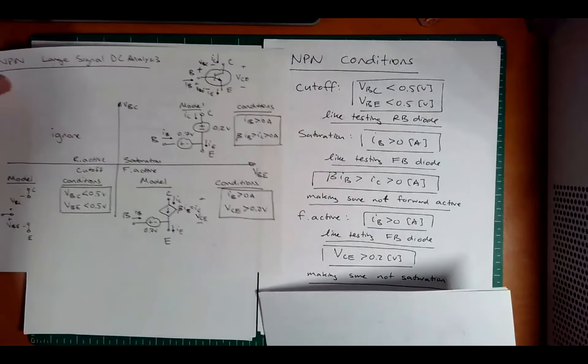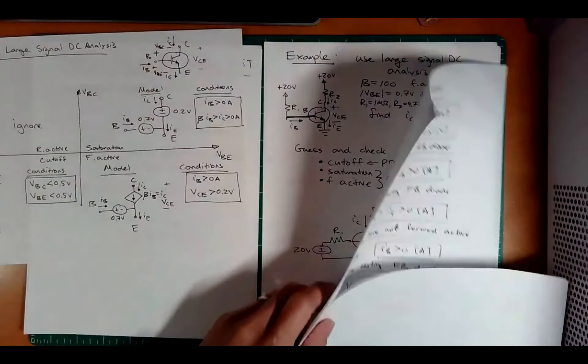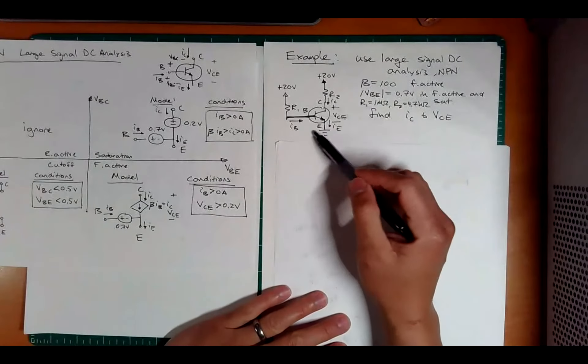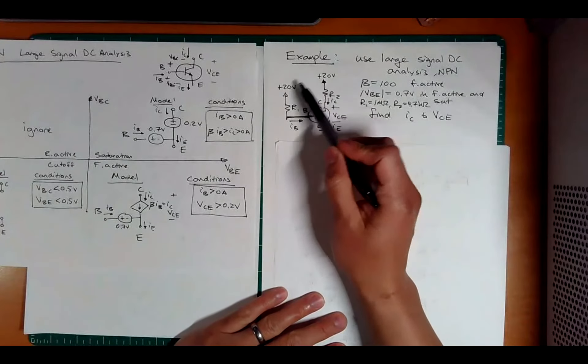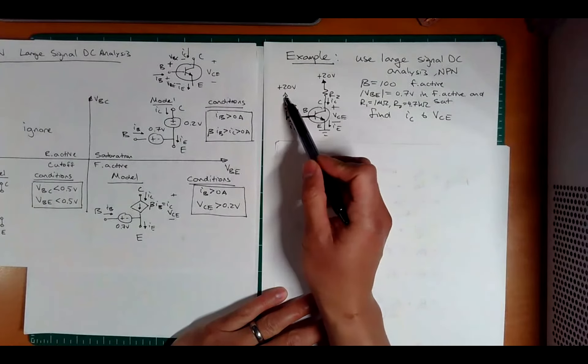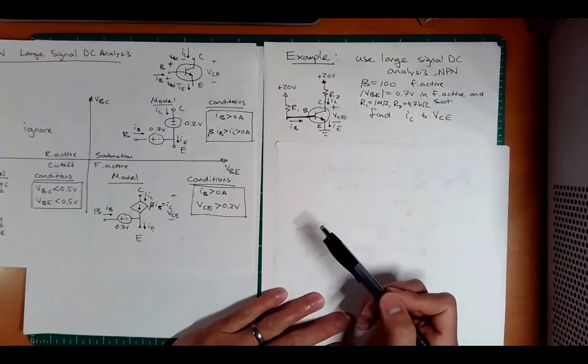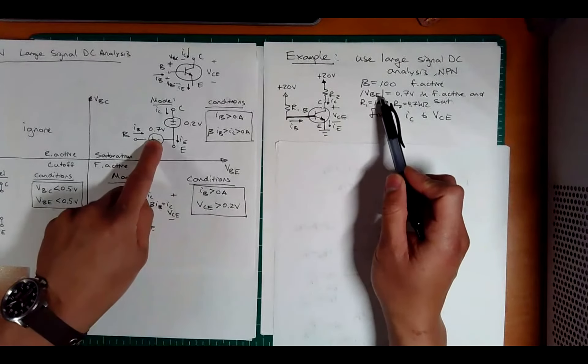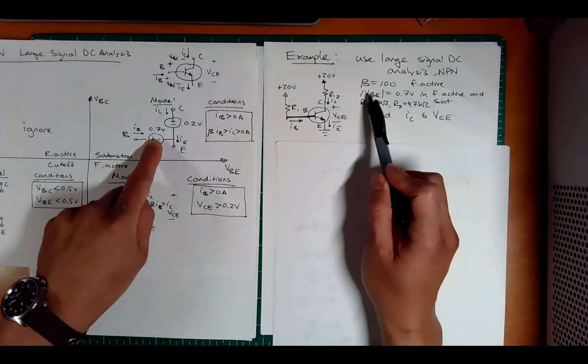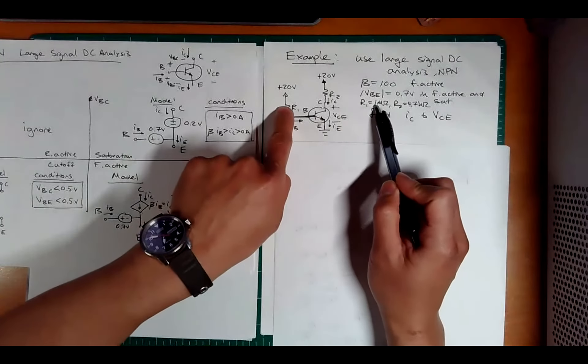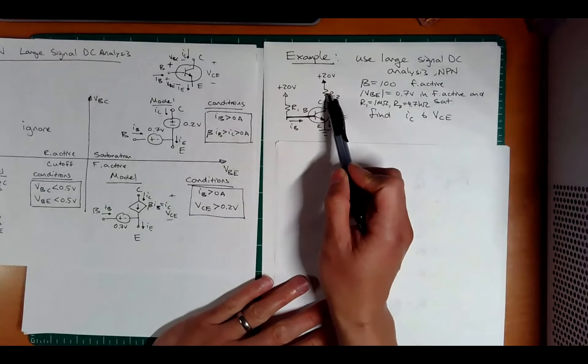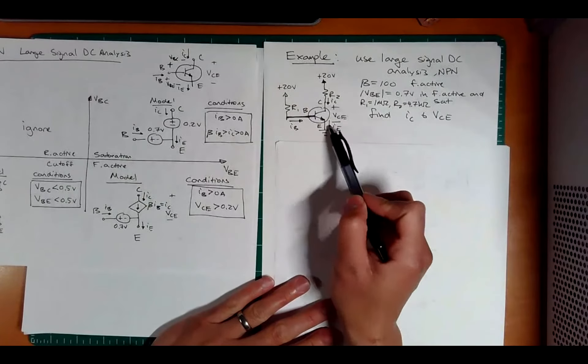All right, let's do an example and let's put it all together. And again, it's going to be very similar to our guess and check procedures from before. So let's look at this example. This should look like that NPN tester circuit. You have 20 volts here, you have a load, you have your NPN and you have your base limiting resistor. It's given that beta is 100. It's given that if it's on, if it's forward active or saturation, that this is 0.7. They give us 1 megaohm, 4.7 kilohms, and they ask you to find what IC and VCE is.